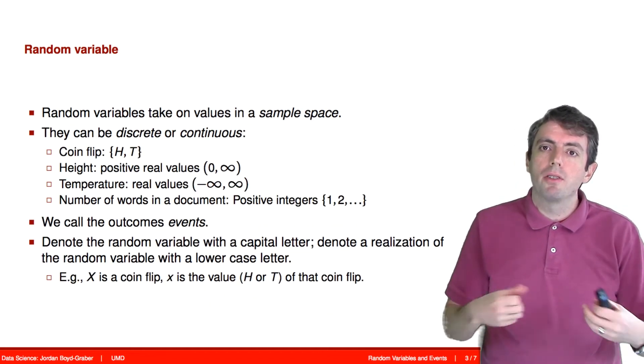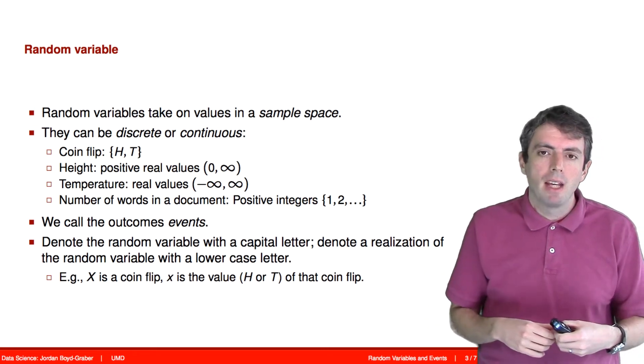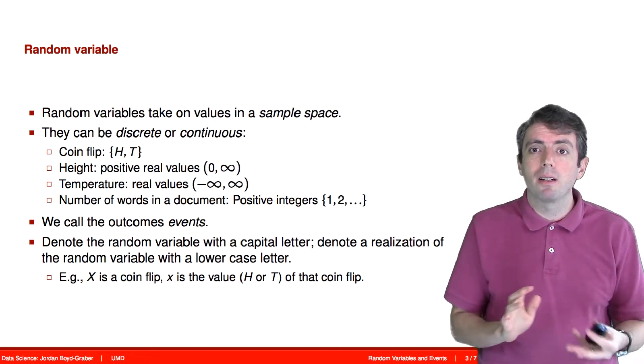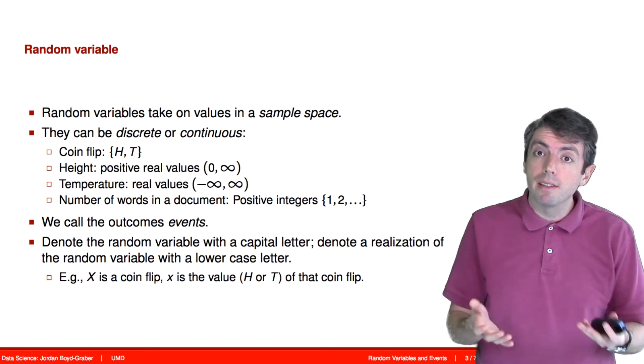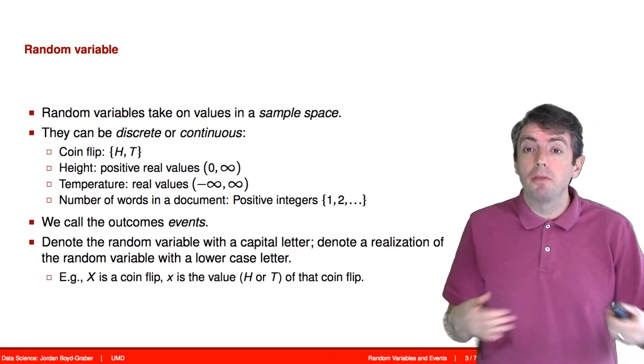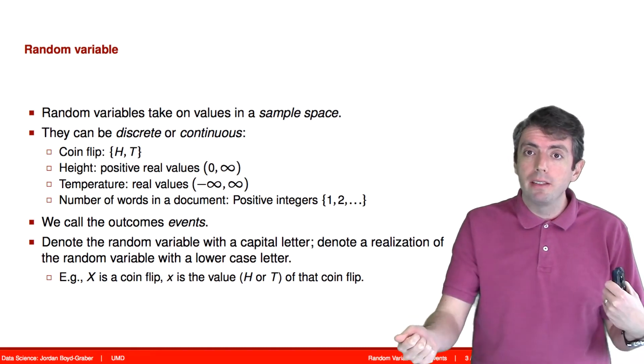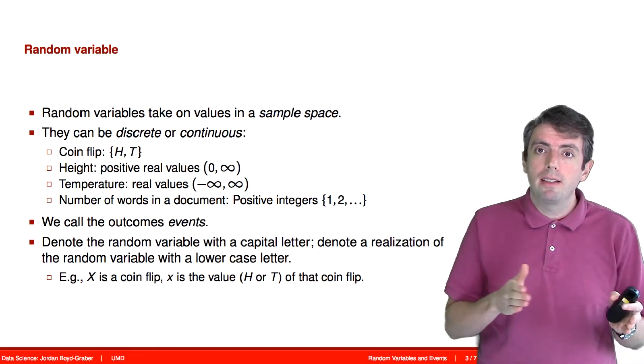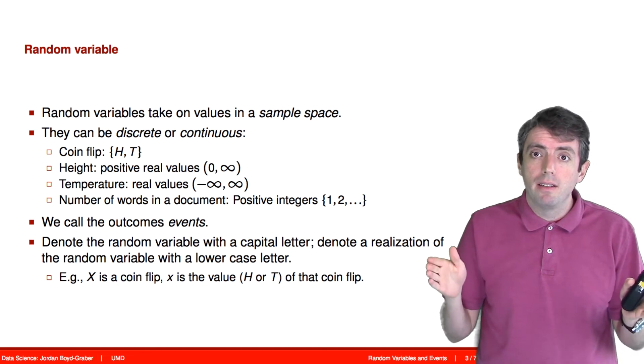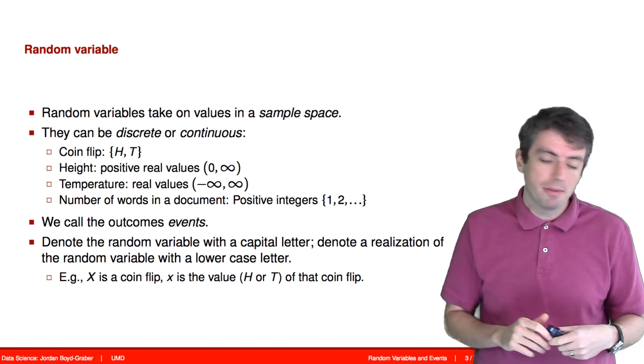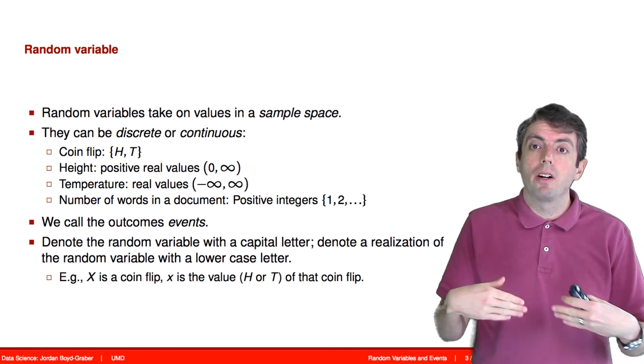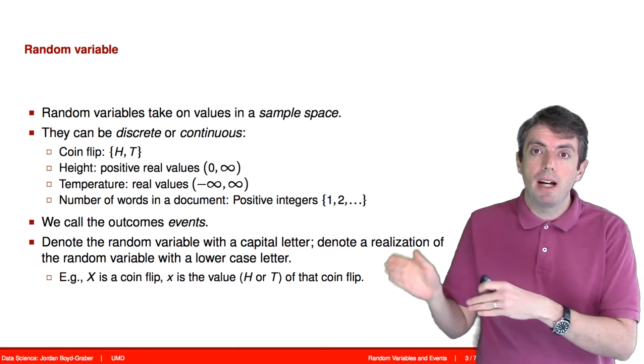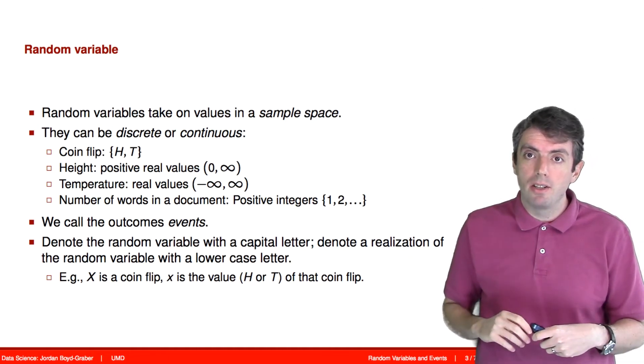So random variables are drawn from some sample space. And this sample space can either be discrete or continuous. We talked about this at the very beginning of the class when we talked about the kinds of data that we're working with. A continuous random variable, for example, takes on all possible real values from negative infinity to positive infinity. Whereas a discrete outcome set just takes on one of a small number of separate values. And each of these different values are called outcomes. So we have a large outcome space, and each of the possible outcomes are possible realizations of our random variable.